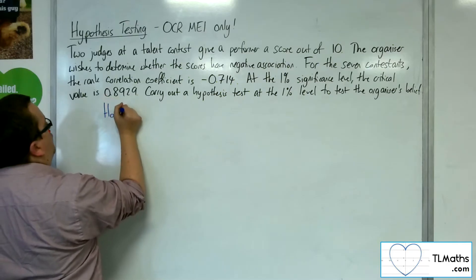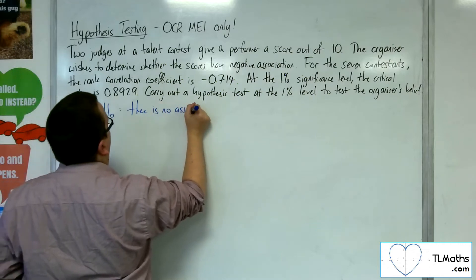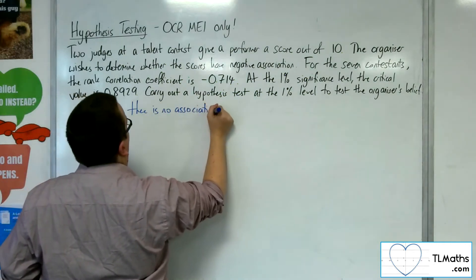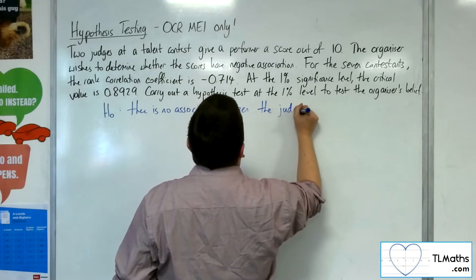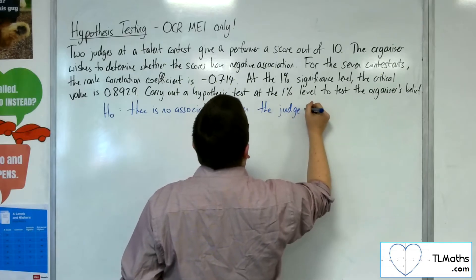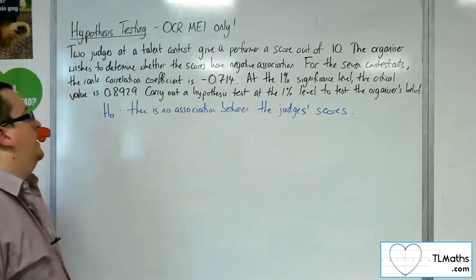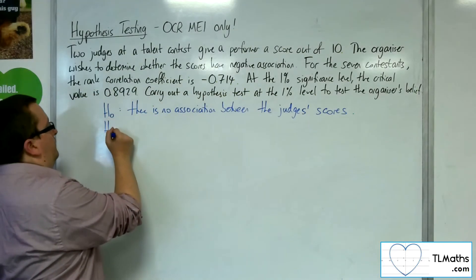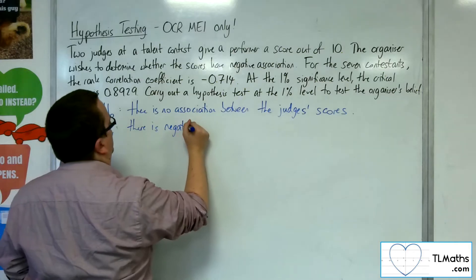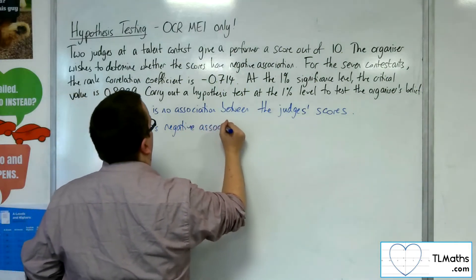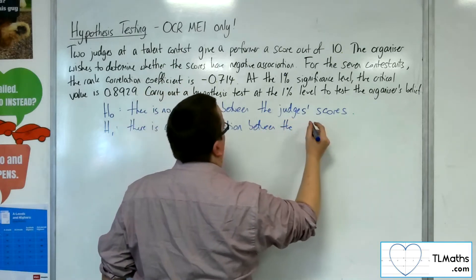H0: there is no association between the judges' scores. And H1: there is negative association between the judges' scores.